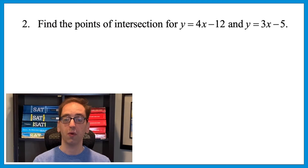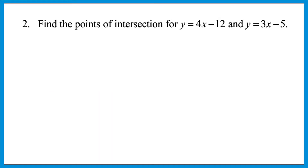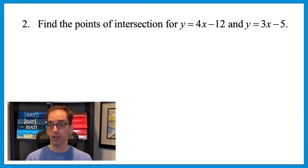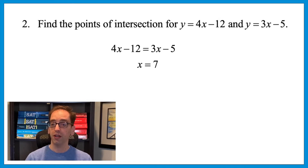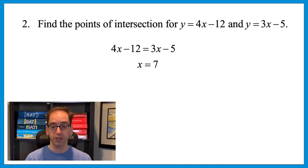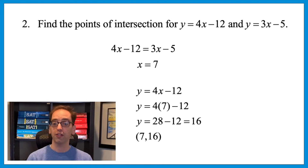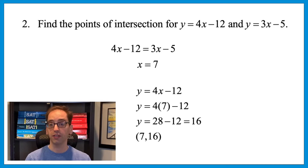Here's how this comes up on a graph question: find the points of intersection for y equals 4x minus 12 and y equals 3x minus 5. When they want points of intersection — where the lines touch — as long as both equations equal y, you can set them equal: 4x minus 12 equals 3x minus 5. Moving x's left and numbers right gives x equals 7. That's the x-coordinate, so plug 7 into the first equation: y equals 4 times 7 minus 12, which is 28 minus 12, or 16. The full point of intersection is (7, 16).